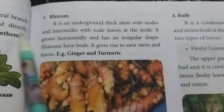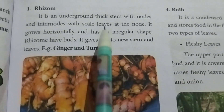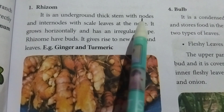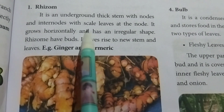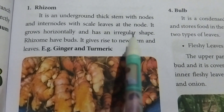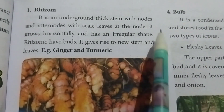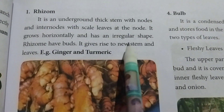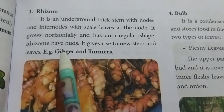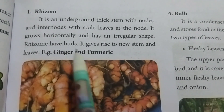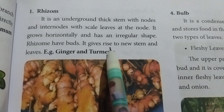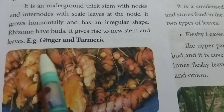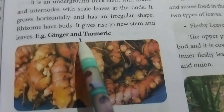First one: Rhizome. It is an underground thick stem with nodes and internodes with scale leaves at the node. It grows horizontally and has an irregular shape. Rhizome has buds which give rise to new stems and leaves. Example: ginger and turmeric.